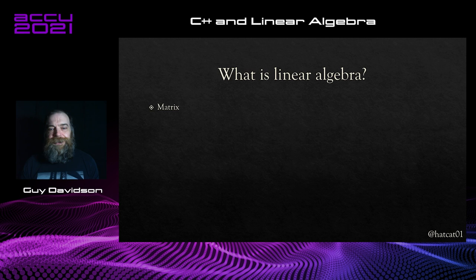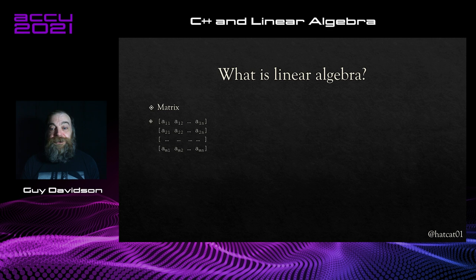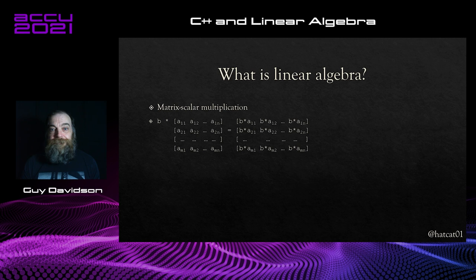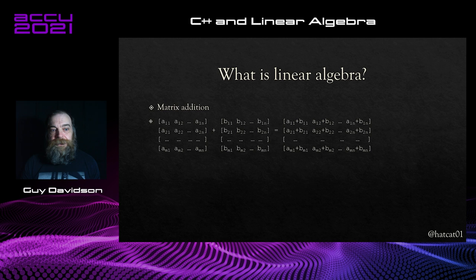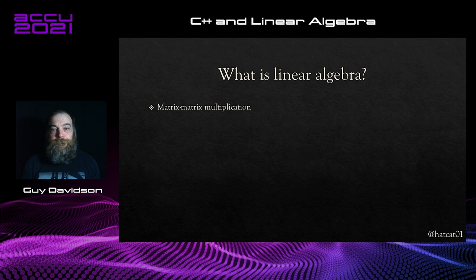Most textbooks will start with the vector, or even the scalar. But we're going to start at the matrix and work backwards. A matrix is an m by n rectangular array of scalar elements. Just as with the real number field, there are operations you can carry out on matrices that match scalar operations. You can perform matrix scalar multiplication, which involves multiplying each element by the same scalar value. You can perform matrix addition, but only for matrices of the same dimension. The dimension of a matrix is the number of rows and columns it contains — it's nothing to do with geometry. There is no such thing as a three-dimensional matrix. Addition takes place member-wise, which is why the operation is so constrained.